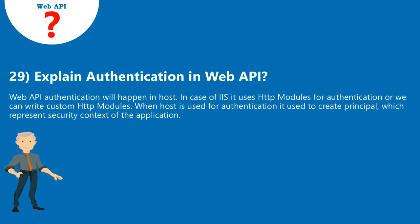Question 29: Explain authentication in Web API. Web API authentication will happen in the host. In case of IIS, it uses HTTP modules for authentication, or we can write custom HTTP modules. When the host is used for authentication, it creates a principal which represents the security context of the application.